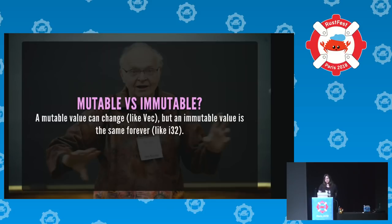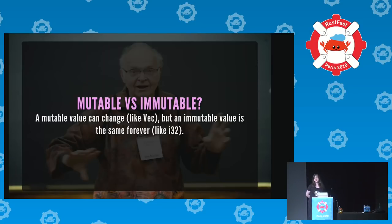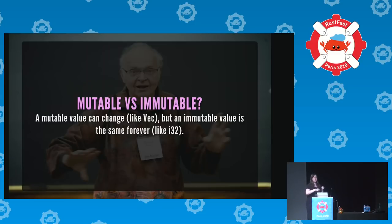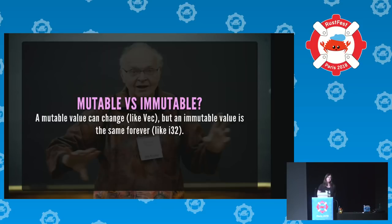There's that word 'immutable' from the title. We need to understand mutable versus immutable. Something mutable is changeable — a good example is a Vec. An immutable value would be something like a number; you can't take the number four and make it be five from now on. But with a Vec, if you add something to the end of it, it has a new value inside it — that makes it mutable.